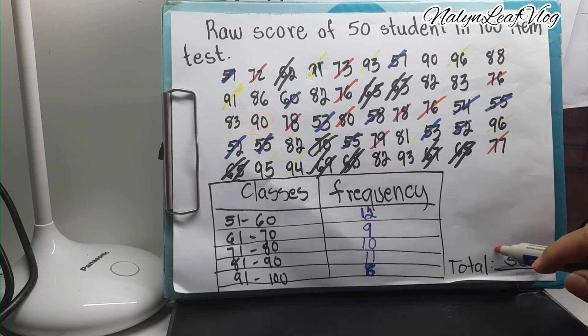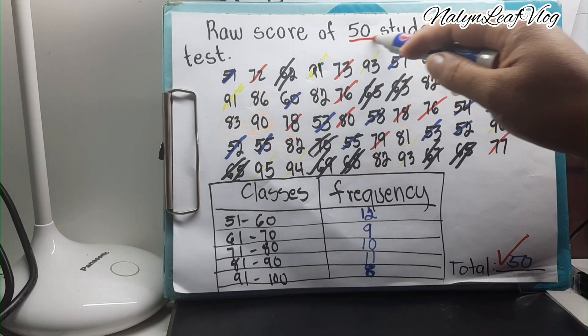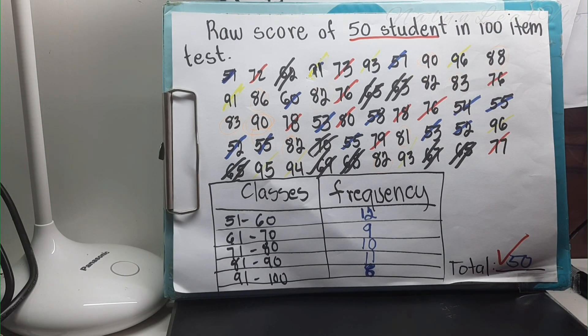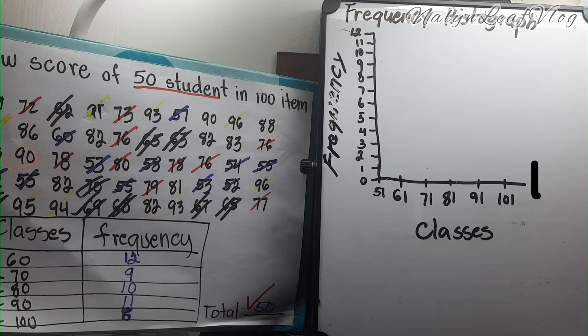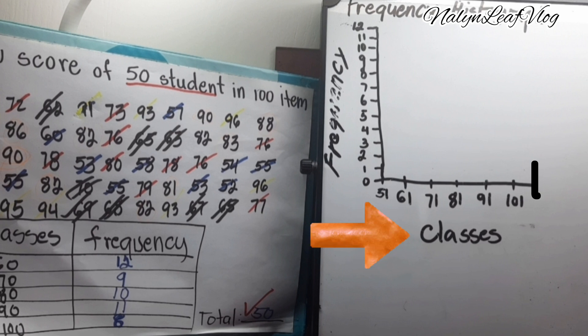The total of the frequencies is equal to the number of students who took the test. Here is the example of the frequency histogram. As we discussed, the graphical presentation of frequency distributions with equal class size has steps — step one: label either class limits or class marks.